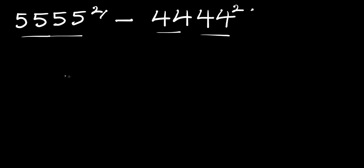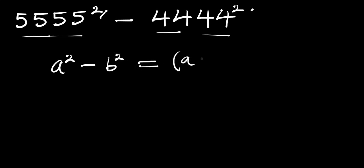So if we have a to the power two minus b to the power two, this equals a plus b times a minus b.